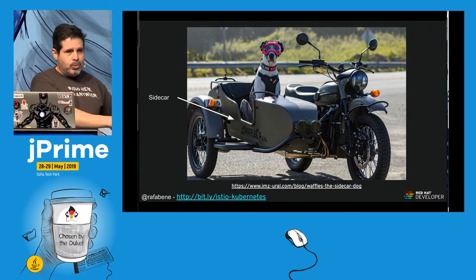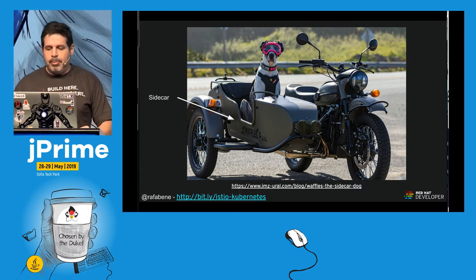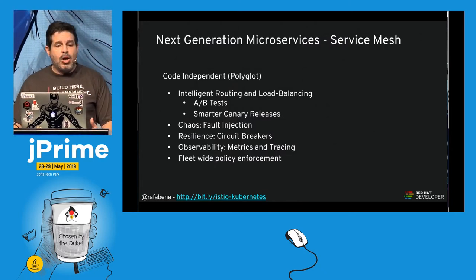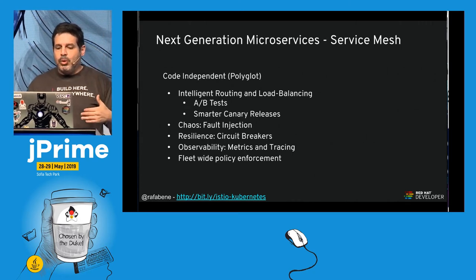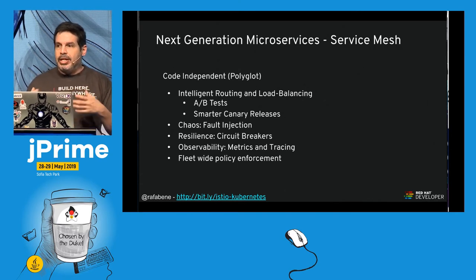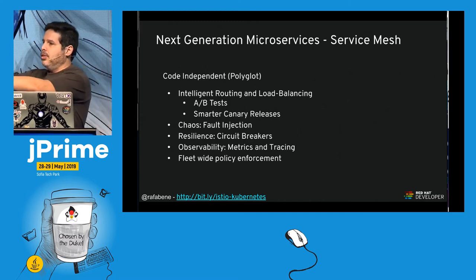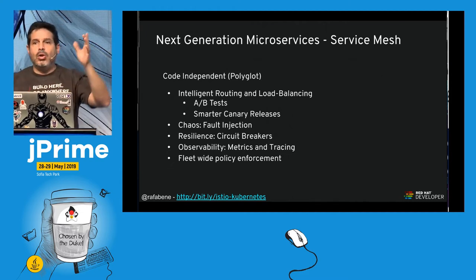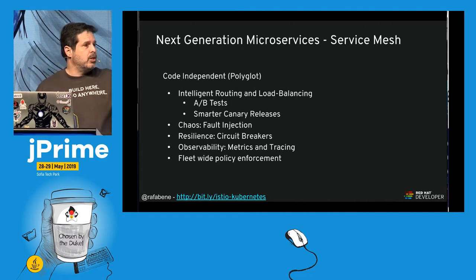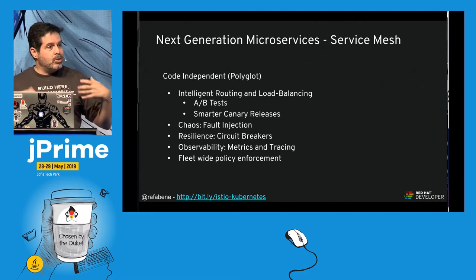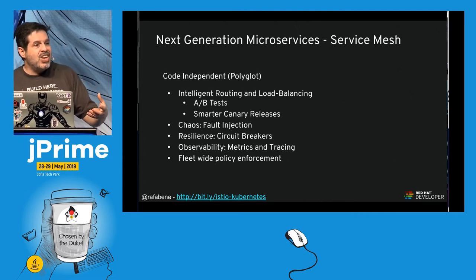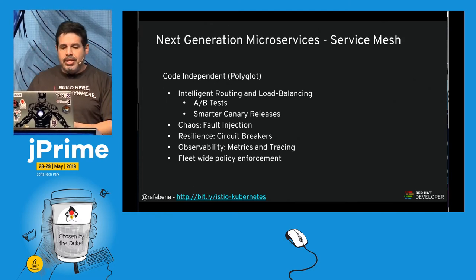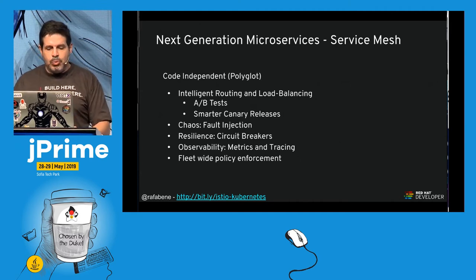This is the sidecar pattern — infrastructure close to your application. What you achieve is a code-independent infrastructure for intelligent routing and load balancing. You can do smarter A/B tests: release an application version that only certain rows of users see, then another version for another group. You can inject chaos, have resilience, have observability — all managed with fleet-wide policy enforcement.